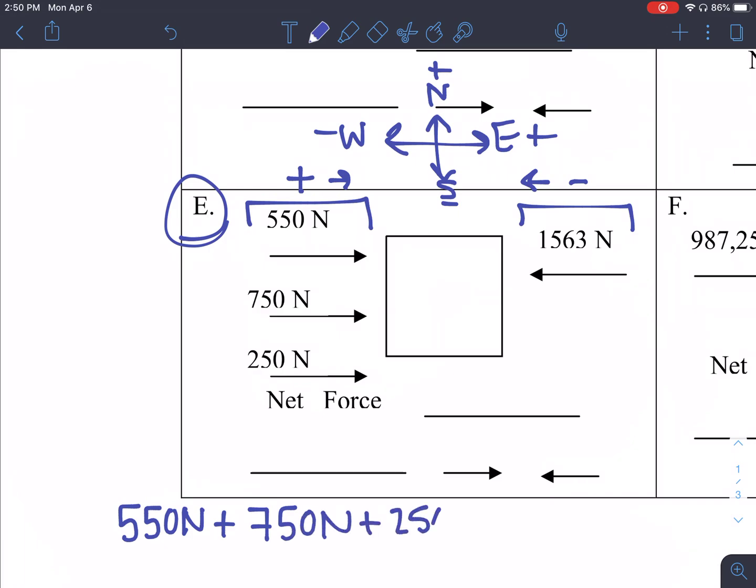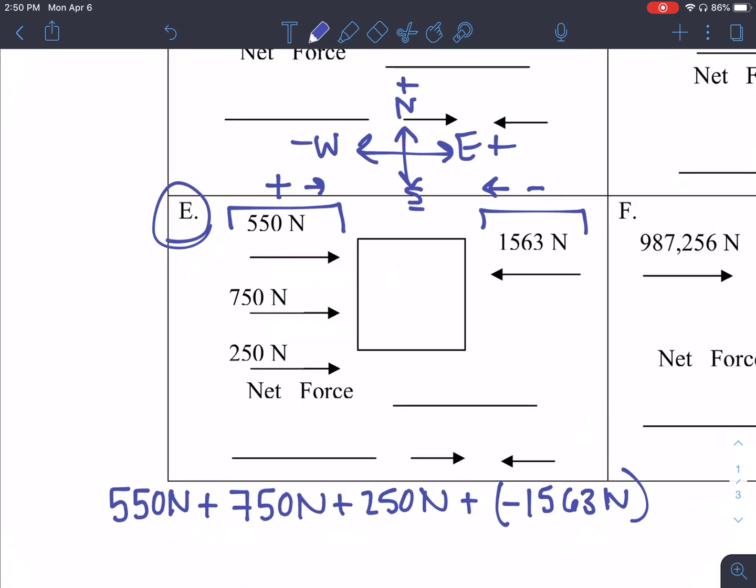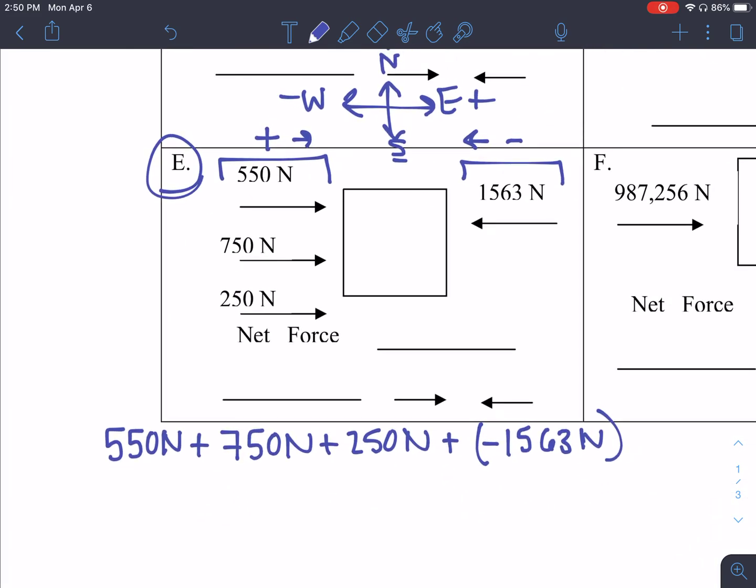So let's go ahead and then plus negative 1, 5, 6, 3 newtons. All right, find the sum of that, and you'll get negative 13 newtons. Okay, so this negative 13 newtons will be written right here next to net force.